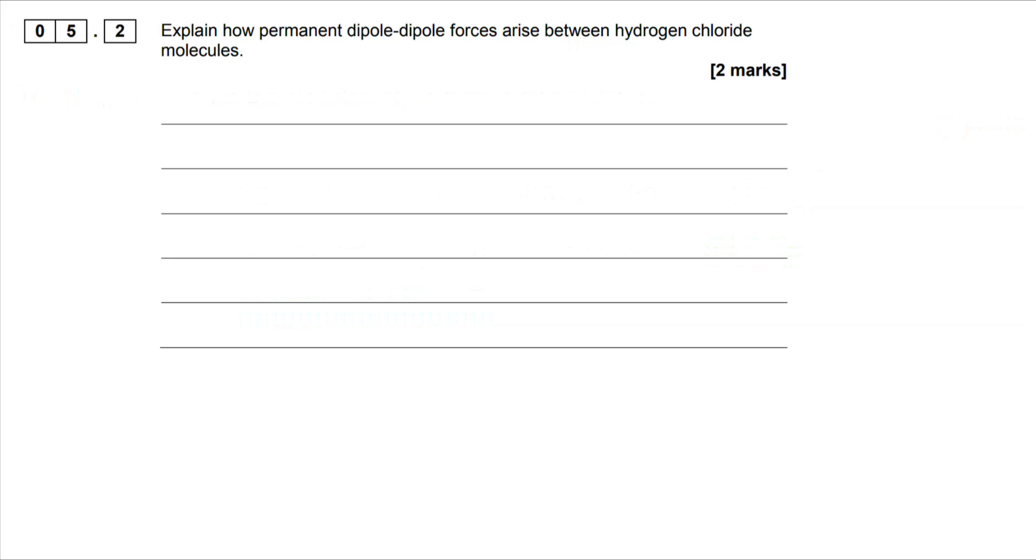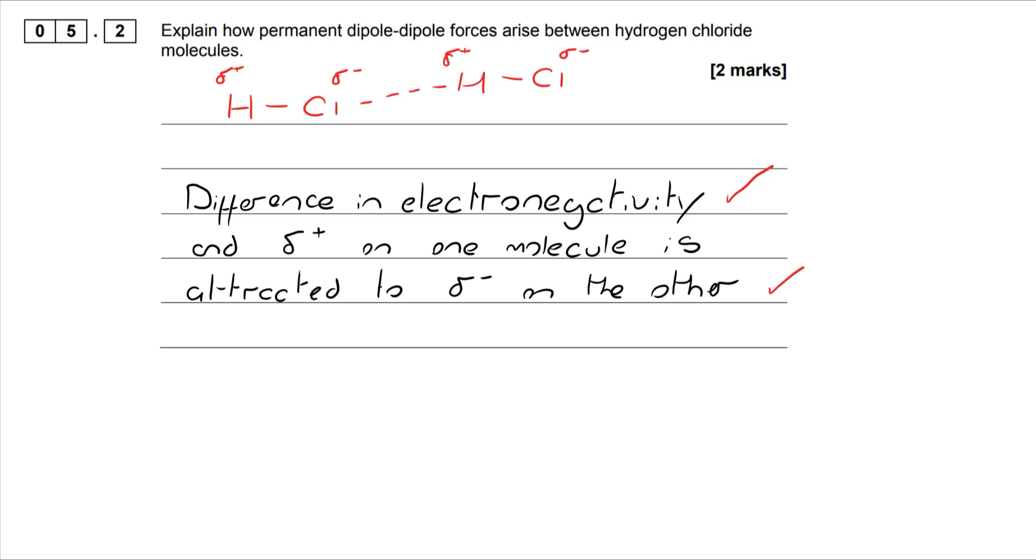Two marks here to explain how permanent dipole-dipole forces arise between hydrogen chloride molecules. Note that this is between one HCl molecule and another. To begin with, it's about recognizing that when you have an HCl molecule, there is a difference in electronegativity, which means a dipole is formed. The second mark is for recognizing that there will then be an attraction between the delta negative on one molecule and the delta positive on another molecule.